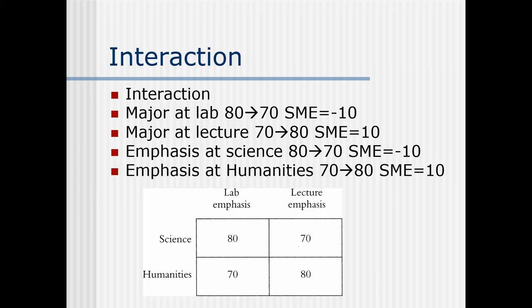The interaction makes intuitive sense: science majors are more in tune with laboratory work, so they score better in lab-emphasis classes. Humanities students are less in tune with lab work and more in tune with lectures and discussing ideas, so they do better in lecture classes. And that's really what an interaction is.